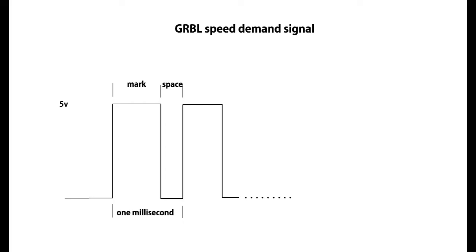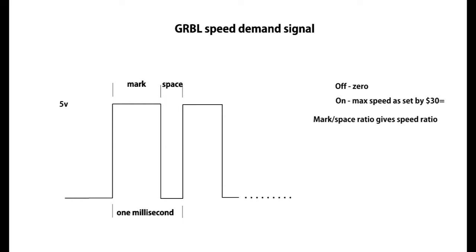The GRBL software outputs a pulse stream where the mark-space ratio gives a speed demand. A low signal means zero speed. Fully on means the maximum speed as set by the commands. In between, the mark-space ratio gives a variable speed. If you're using a DC motor as a spindle, that's quite useful — fed directly to the motor it gives a fairly crude but usable signal for speed.